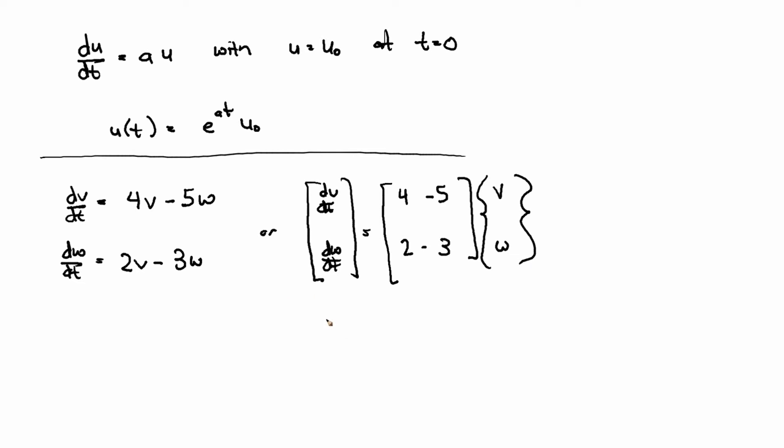Or I might say that this is du/dt, where u is now a vector. This is A, and this is u.